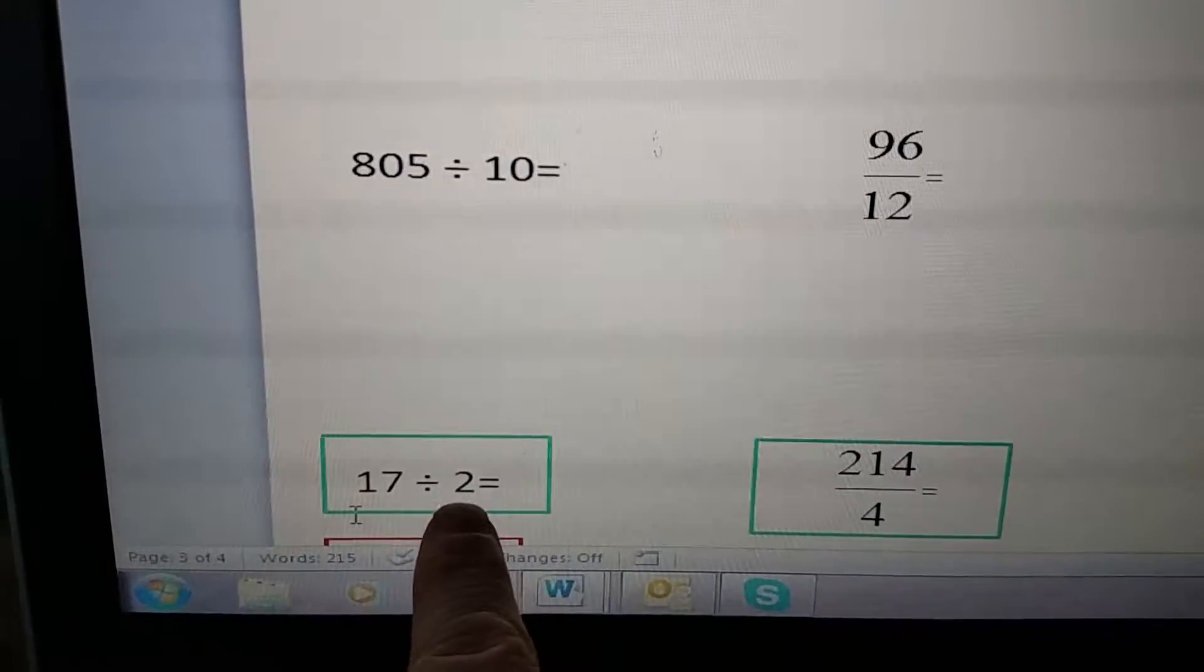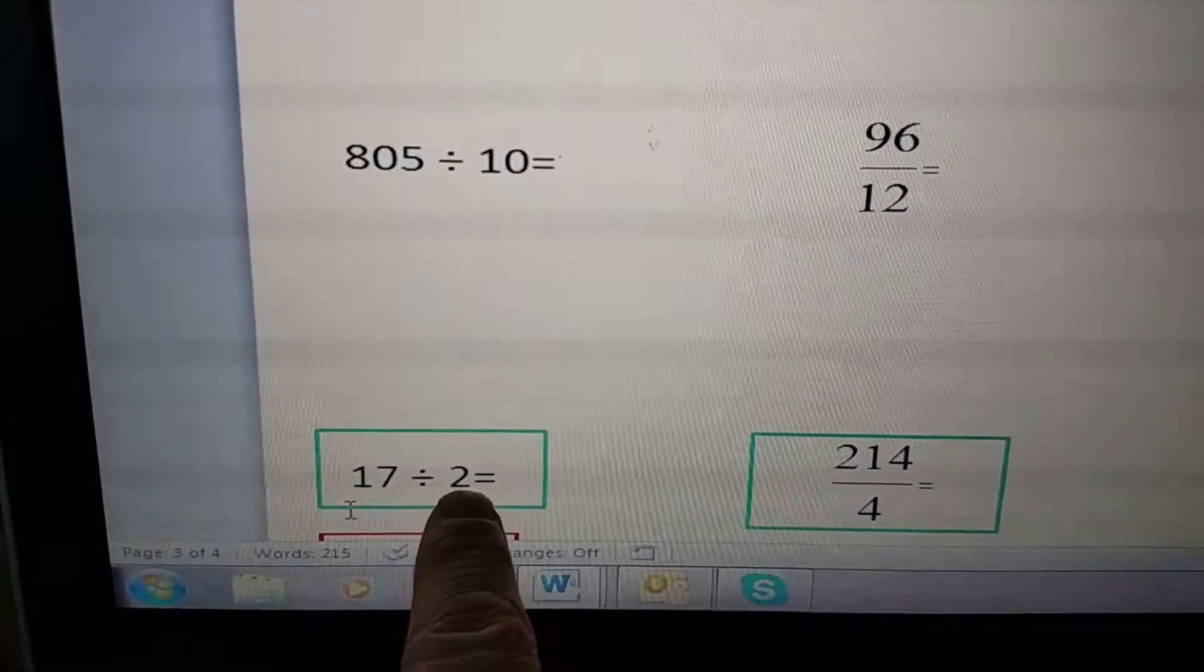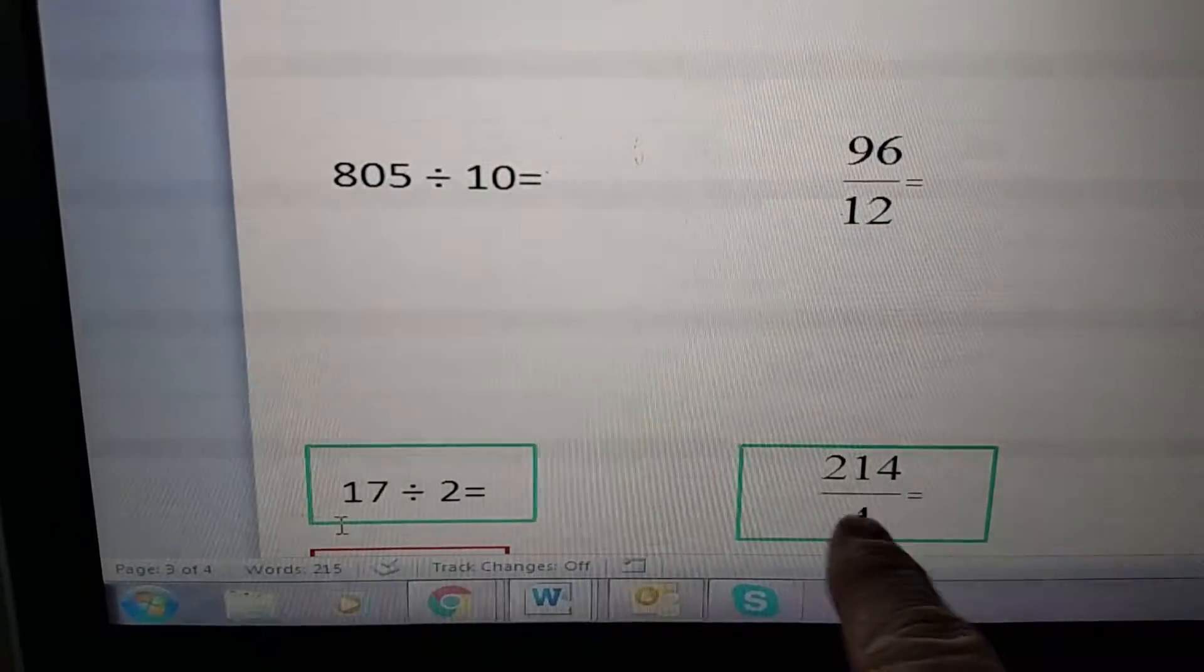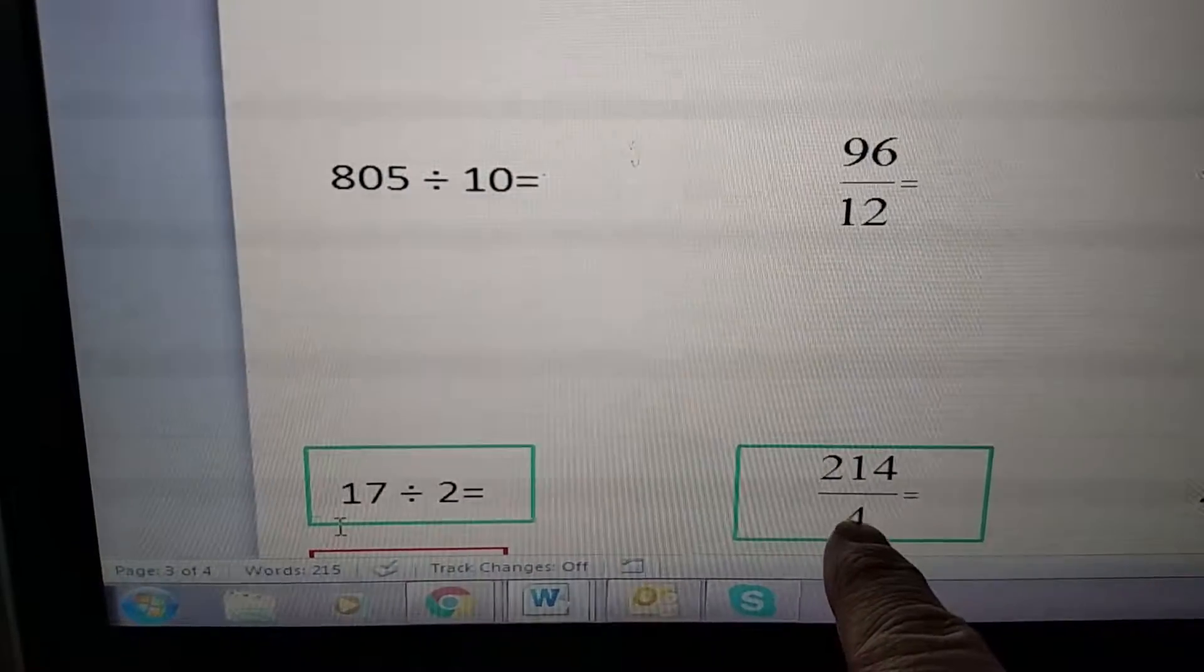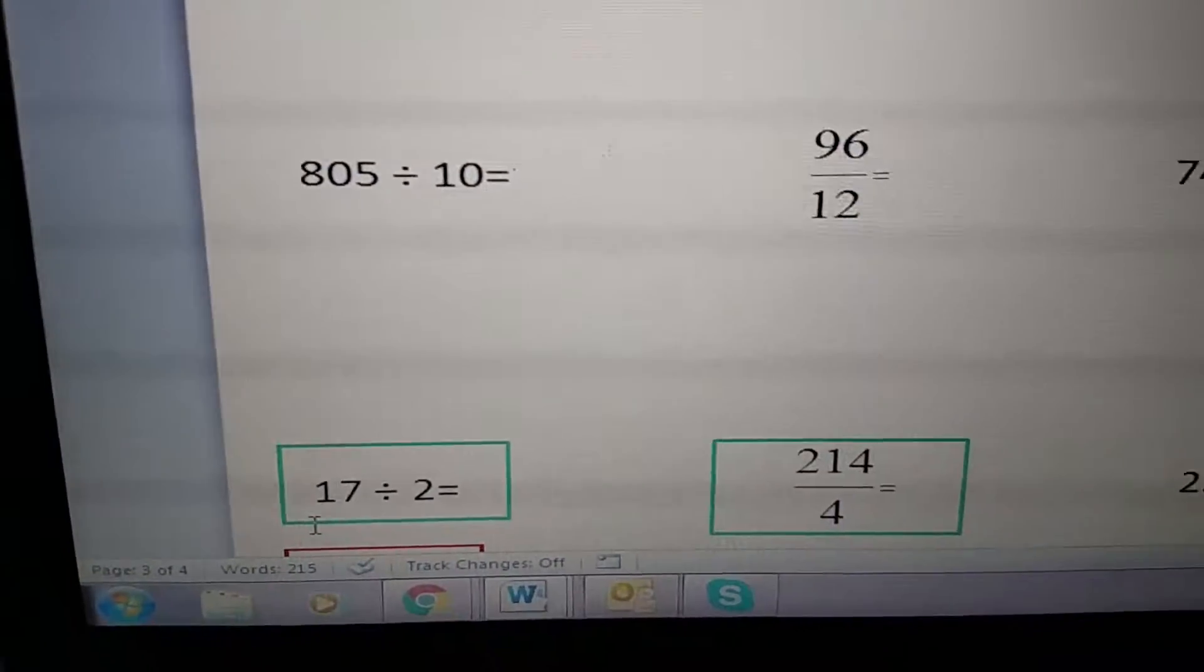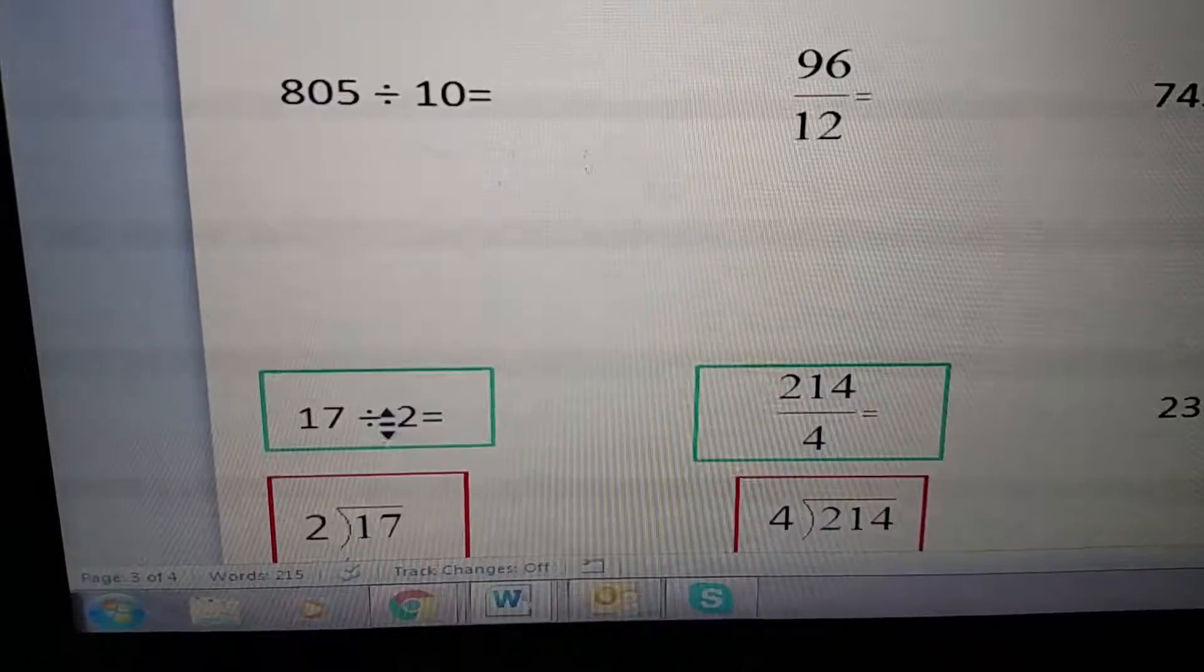Whenever you have an equation written like this, the second number is your divisor—how many groups you're making. Same thing for this problem: your denominator is your divisor. It's how many groups you're making of that 214.